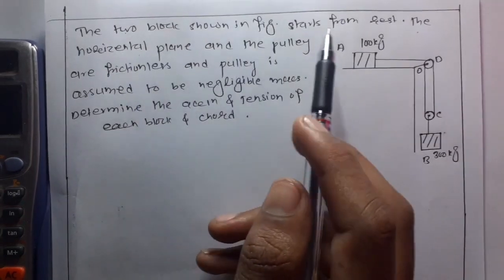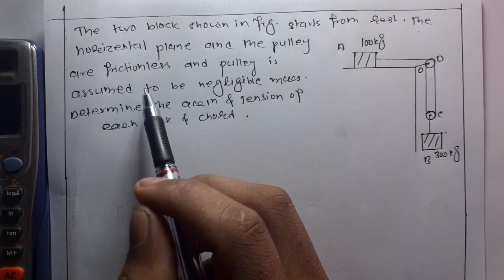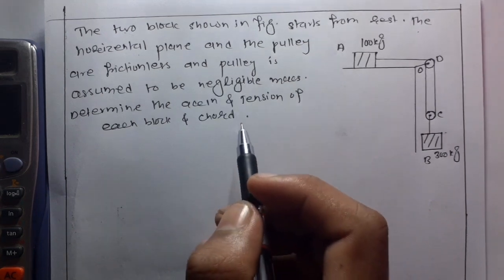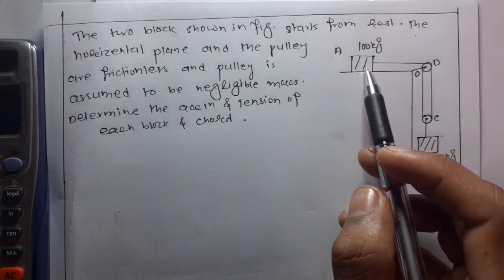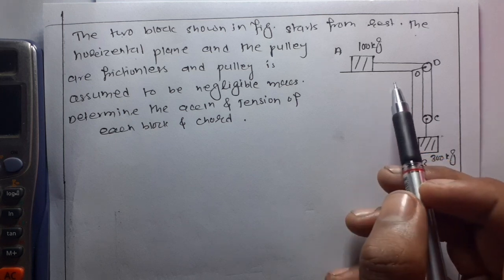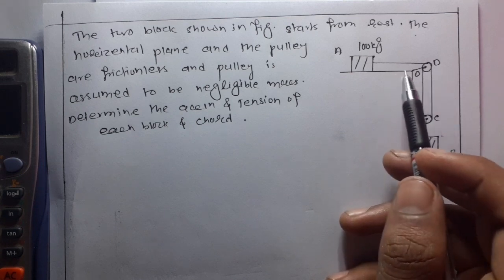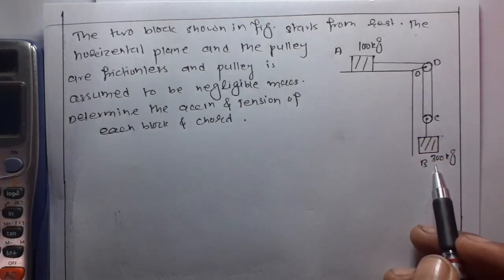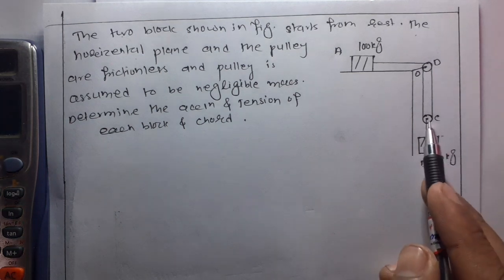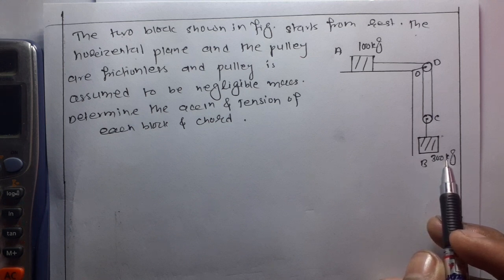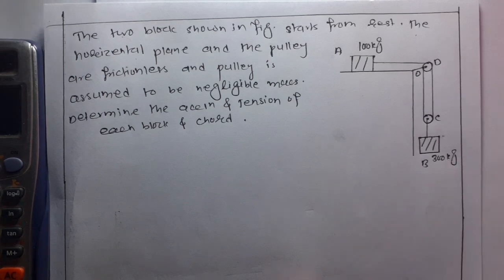The question shows two blocks starting from rest. The horizontal plane and pulley are frictionless, and the pulley has negligible mass. Determine the acceleration and tension for each block. Block A has a mass of 100 kg placed on a frictionless horizontal plane, attached via a pulley. Block B has a mass of 300 kg connected at point C. We need to find accelerations of block A and block B, and tensions T1 and T2.